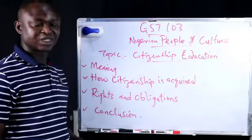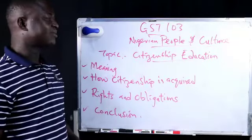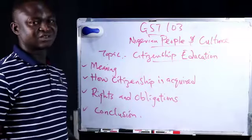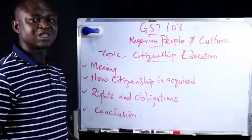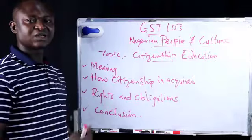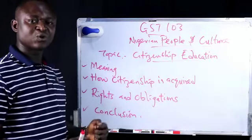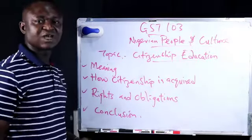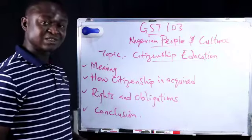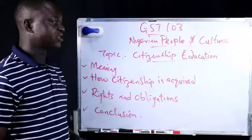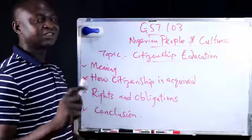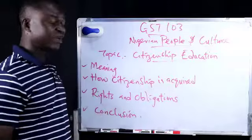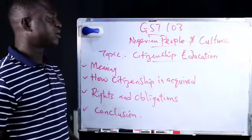Having looked at amalgamation — how Nigeria came into being — and the constitutional development that has taken place in Nigeria, dating back to the first amalgamation document used to rule Nigeria by the colonial masters in 1914, as drafted by Lord Lugard, who was the first Governor-General of Nigeria, up until the 1999 constitution that marks the current republic.